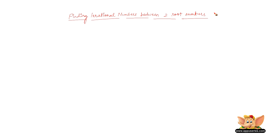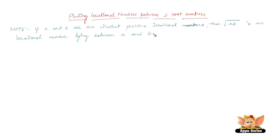Let's learn how to find irrational numbers between two root numbers. Before we go to an example, let us write a note. If a and b are two distinct positive irrational numbers, then the root of the product of a and b — that is √(a·b) — is an irrational number lying between a and b.